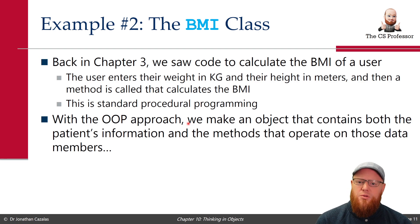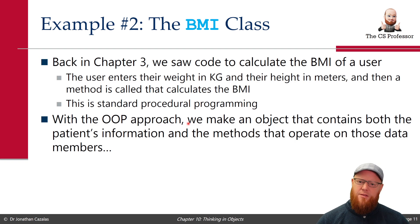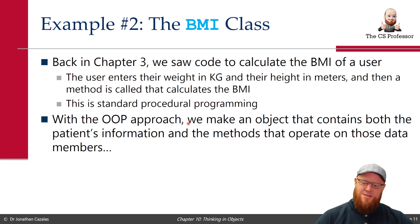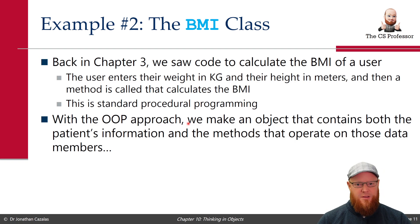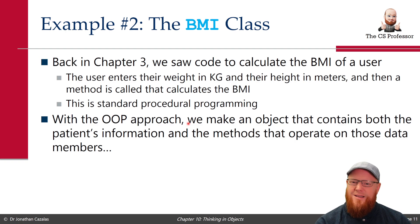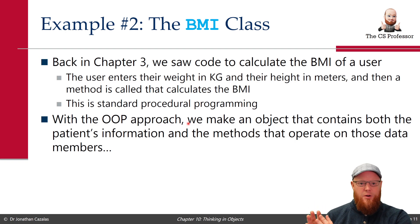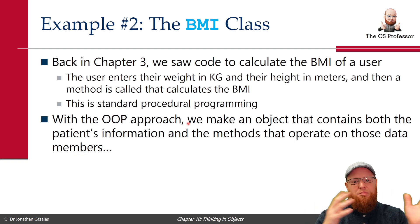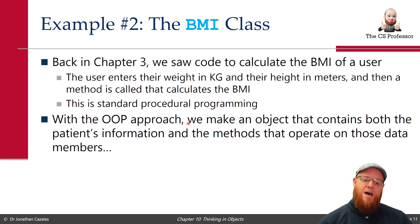In chapter 3, we calculated the BMI of a user: weight in kilograms, height in meters, or weight in pounds and height in inches. Previously, after receiving weight and height from the user, we called a static method — a service-level method — and asked it to return the BMI. Nothing wrong with that, but we have the data on one side and the methods on the other operating on that data. Why not package that together inside an object? That's the OOP approach: we're going to make an object that contains both the patient's information and the methods that operate on those data members.